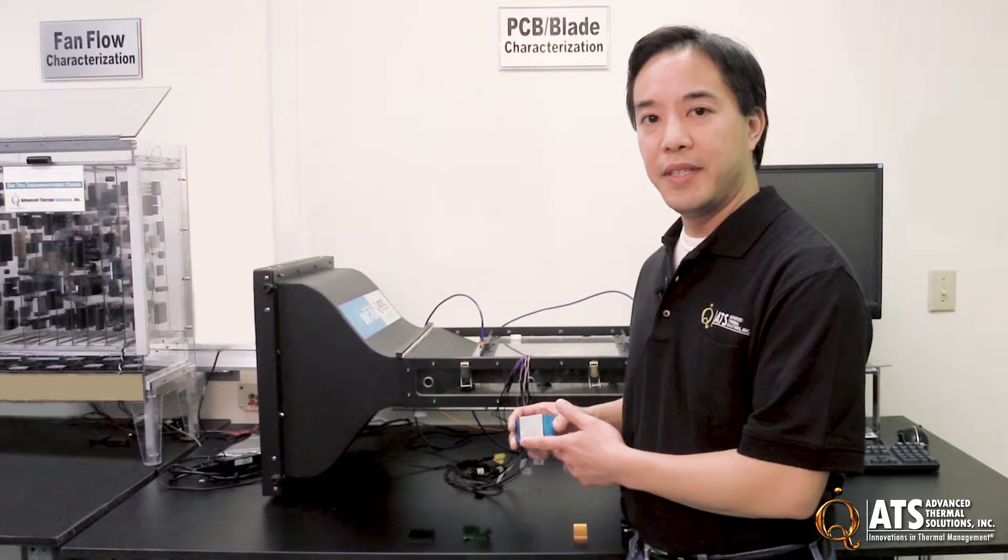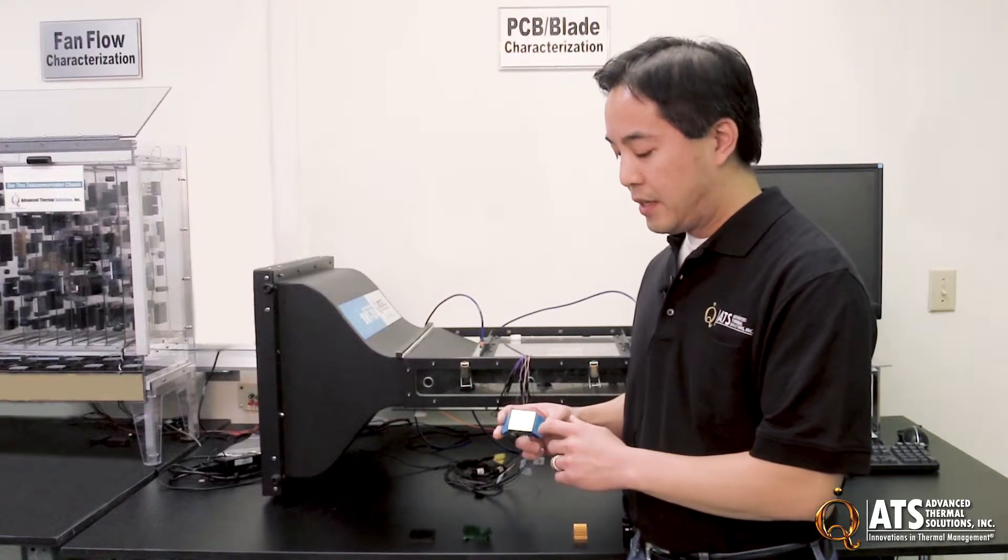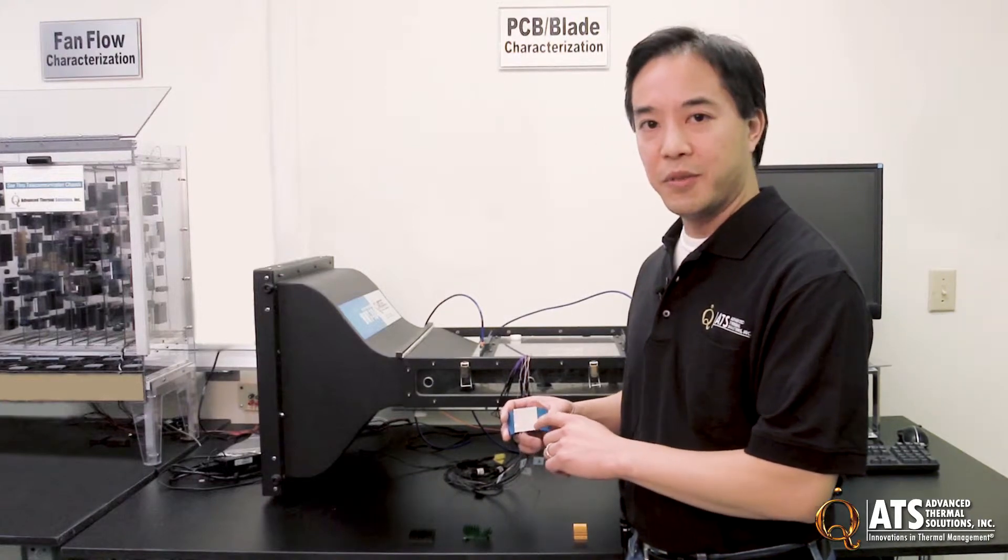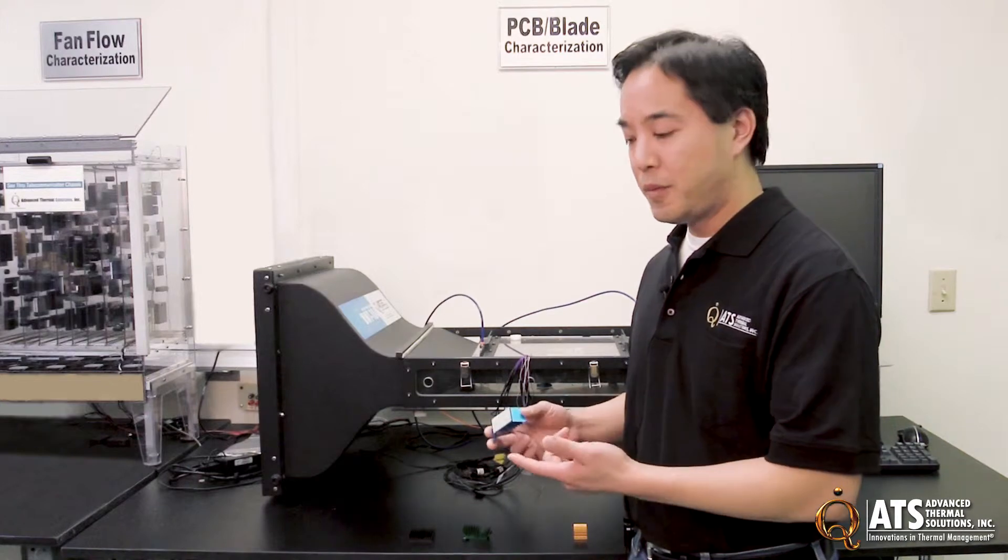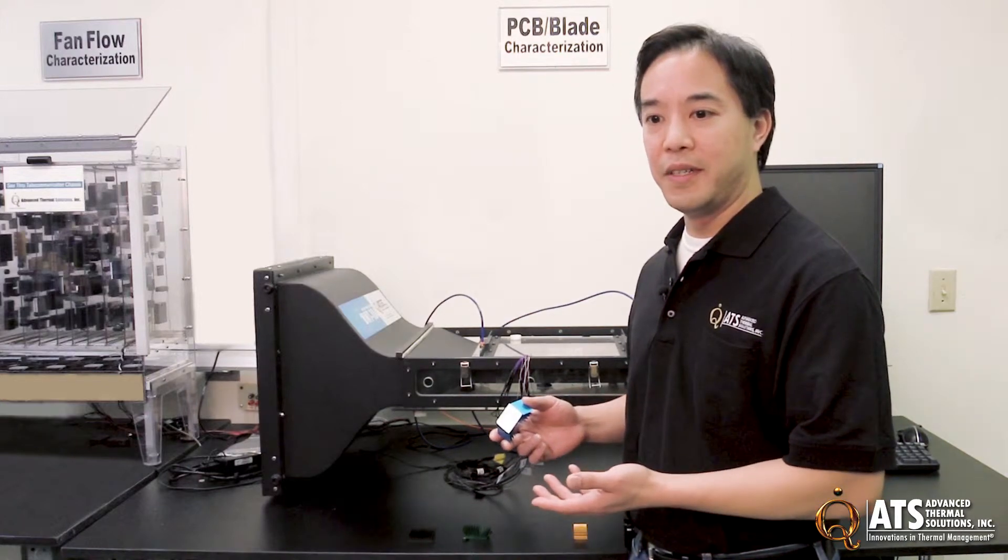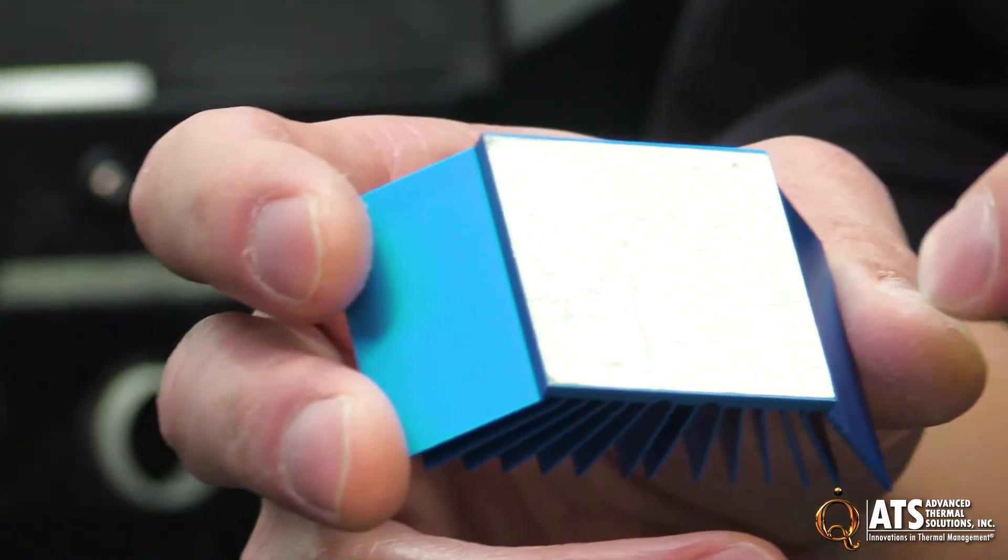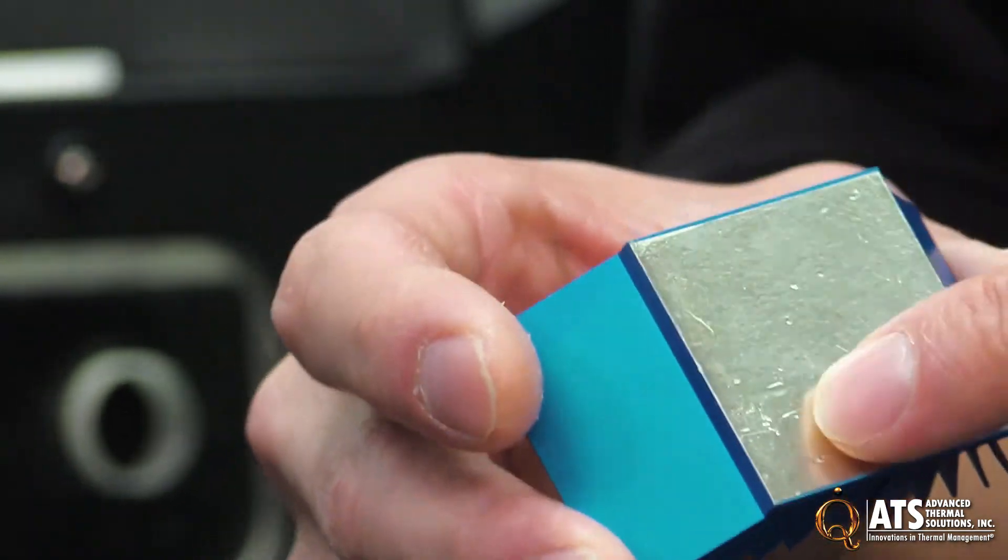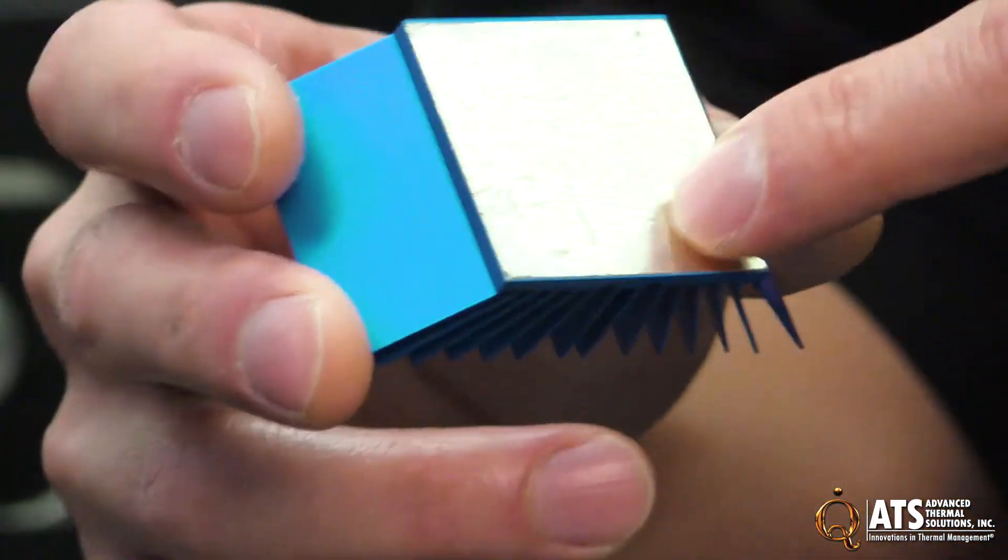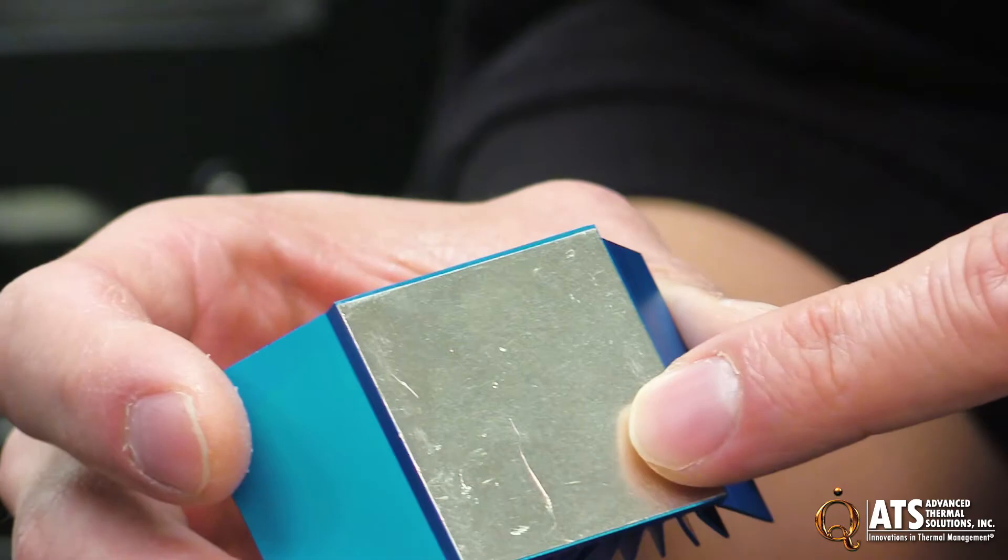The same thing with the dimpled surfaces. They did their tests with a wooden tongue depressor, but it might be some kind of shipping damage that you might see. Or if another heat sink's fins hit the bottom of this phase change material, it could make little dimples in it.